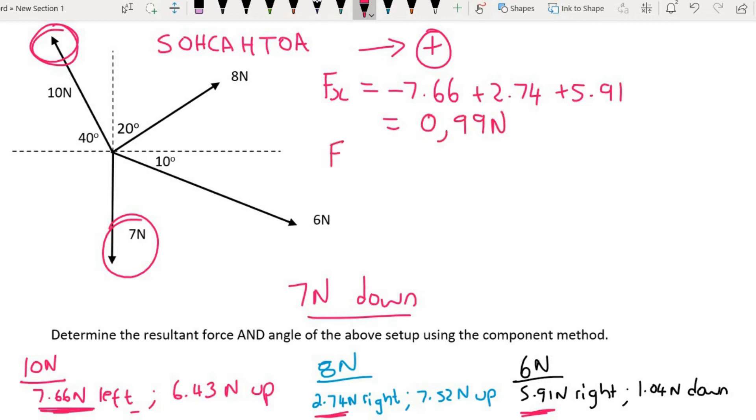If I look at the y values, I'm going to choose up as positive. We're going to have 6.43 which is positive because it's up, plus 7.52 minus 1.04 minus the 7 which is going down. That gives us 5.91 newtons up because we've got a positive answer. Now we know the right and we know that it's going up, so it's going to go a little bit to the right and a little bit up.